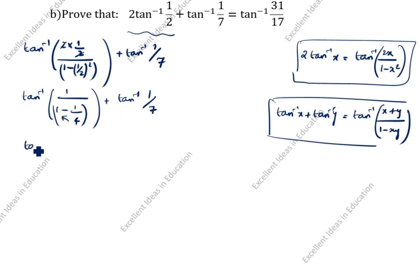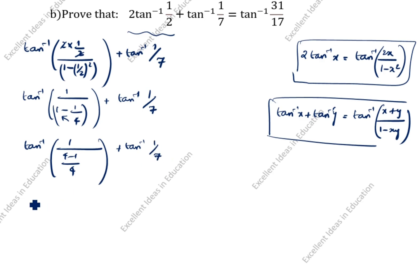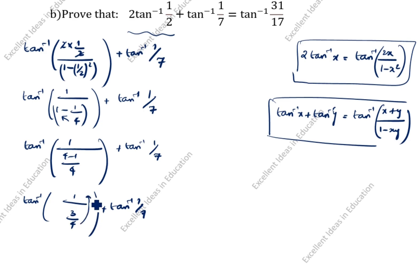Cross multiplying: tan inverse of 1 divided by 4 minus 1 by 4. Tan inverse of 1 over 4 minus 1 is 3 by 4, plus tan inverse of 1 by 7. The 4 goes up and 3 stays down. So we get tan inverse of 4 by 3 plus tan inverse of 1 by 7.